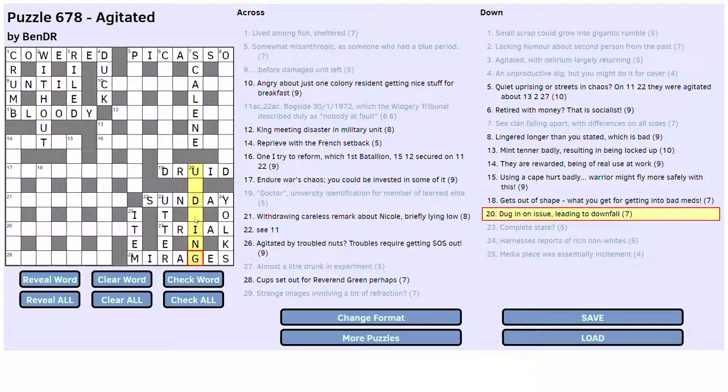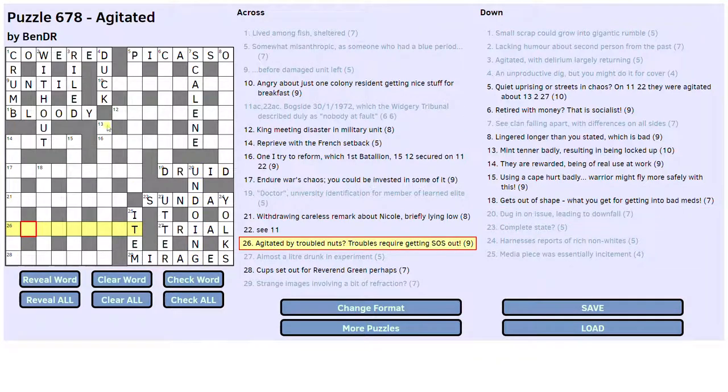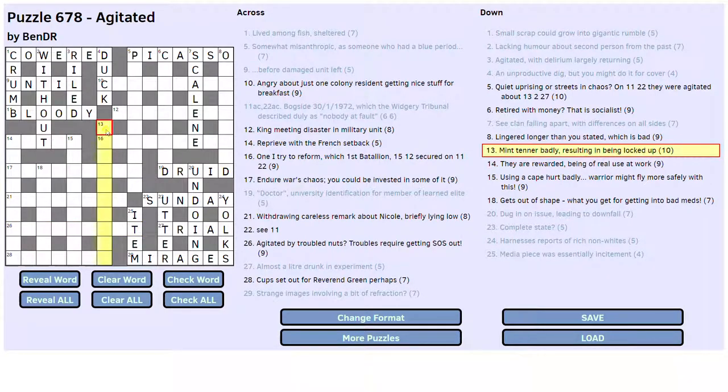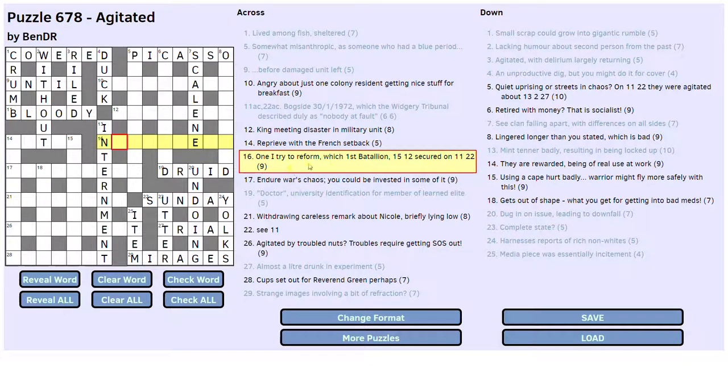I space G is always in. Undying. Dug in. Dug in on issue leading to downfall. Undoing is a downfall isn't it? Let's write that in. Have a look. Oh it's an anagram of dug in on. Is it? Yeah. Issue must be an anagram indicator then. Right. Good. Not too much thematic stuff so far. That's probably a good thing. Right. Mint tenor badly. Anagram. Resulting in being locked up. In. In. In. Internment. Intern. Yeah. Internment. That's being locked up isn't it? Internment. It's an anagram of mint tenor.